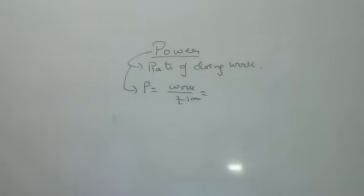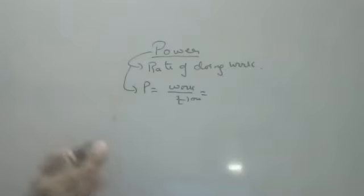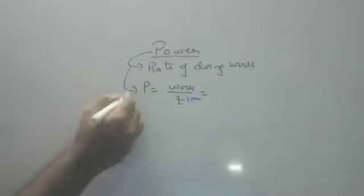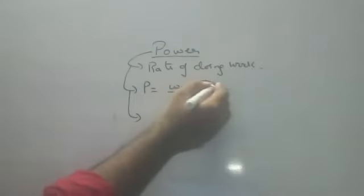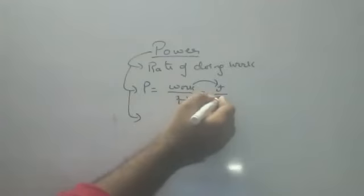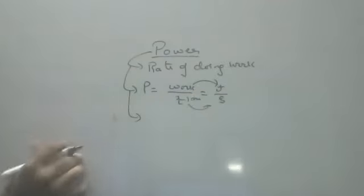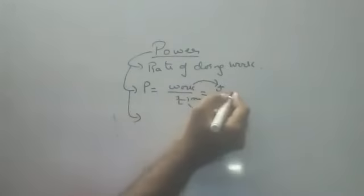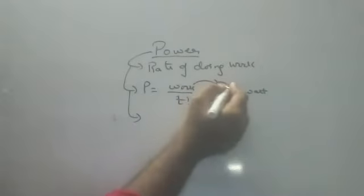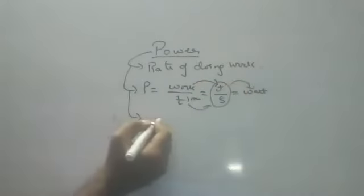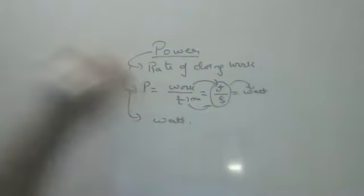Work divided by time is called power. Now, what are the units of power? Work is in joules, time is in seconds. Instead of saying joule per second every time, we can simply say watt. The unit of power is watt.